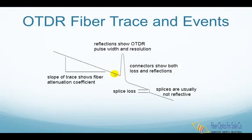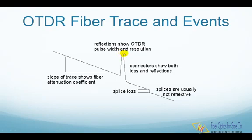The slope of the fiber trace shows the attenuation coefficient of the fiber and is calibrated in dB per kilometer by the OTDR. Connectors and splices are called events; both should show a loss, but connectors and mechanical splices will also show a reflective peak. The height of the peak will indicate the amount of reflection at the event, unless it is so large that it saturates the OTDR receiver — then the peak will have a flat top and a tail on the far end, indicating the receiver was overloaded.